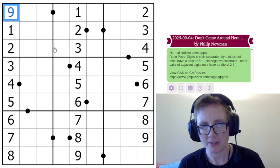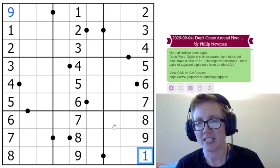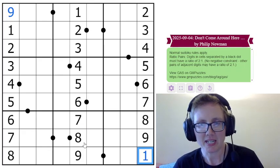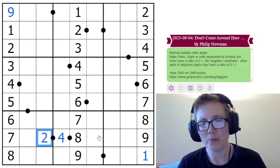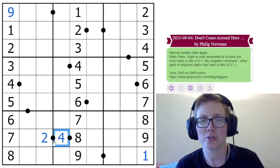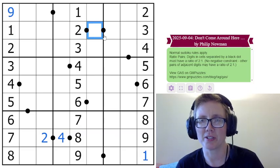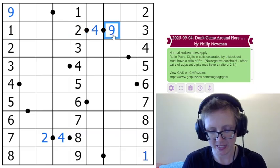So we're going to start with finishing off this column with a 9 and this column with a 1. And then if we focus in on some of our black dots, the only digit that's in a 1 to 2 ratio with 8 is 4, and then we have to go from 4 to 2. Now 2 either goes to 1 or 4, but there's a 1 in the row so that's going to be a 4 there, and an 8 right here.